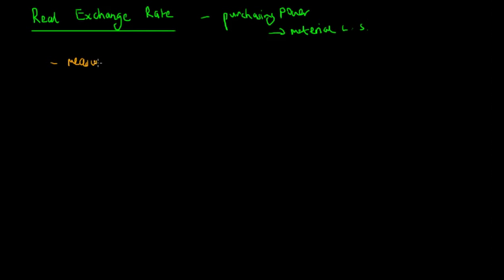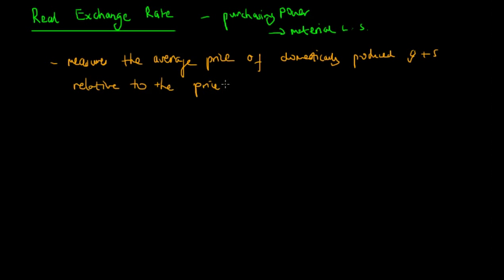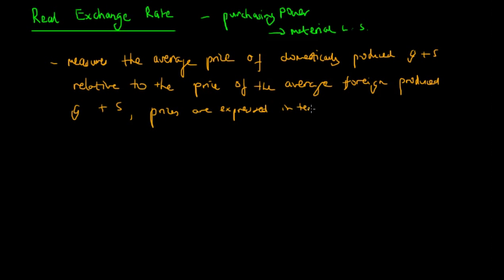The real exchange rate measures the average price of domestically produced goods and services (I'll denote that GNS for simplicity) relative to the price of the average corresponding foreign produced goods, and these prices must be expressed in terms of a common currency.